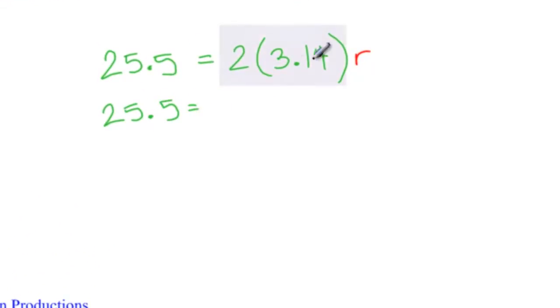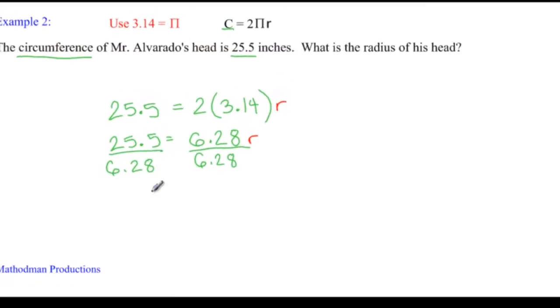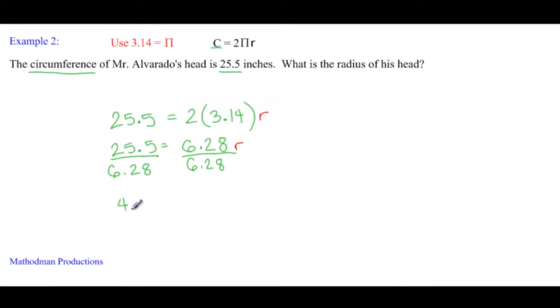Simplify from here. 25.5 equals 2 times 3.14 is just 6.28 times my radius. It's a single step equation from here. All you have to do is divide 6.28 on both sides. And I got 4.06, which I rounded to the nearest hundredths, equals my radius.